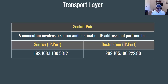A socket is an IP address with a port number. A socket pair is the source and the destination — involving a source and destination IP address and a source and destination port number. For example, source IP address 192.168.1.100 with source port 53,121 is the dynamic port identifying the client, connecting to destination IP 209.165.100.222 on port 80. Port 80 identifies the HTTP web service, so this is a client connecting to a web server.